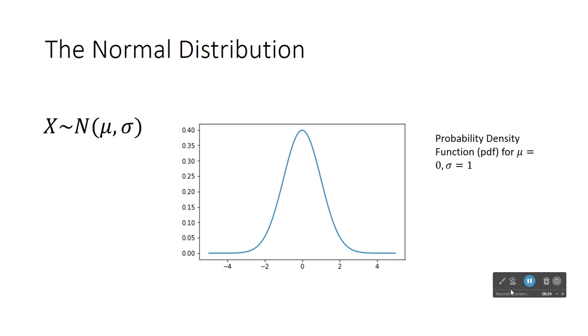Now, we will be working a great deal more with the normal distribution. And on x, a random variable x is normally distributed when we have this notation, x twiddle N(μ, σ). This is the mean.